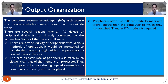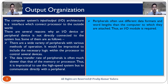The third point is that peripherals often use different data formats and word lengths than the computer to which they are attached. For example, if your printer is working on 16-bit and your microprocessor is working on 8-bit, the word length and data format mismatch will affect data communication. To avoid all these reasons, we need an input-output model.